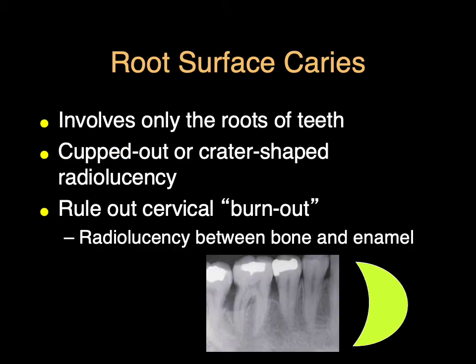Root surface decay is a significant problem especially in our geriatric population with xerostomia, because cervical decay is where we see xerostomia-related decay. It tends to be a cupped-out or crater-shaped radiolucency. We certainly need to rule out burnout when evaluating this, but here we can see a cupped-shaped radiolucency — different than burnout, which we'll discuss next.